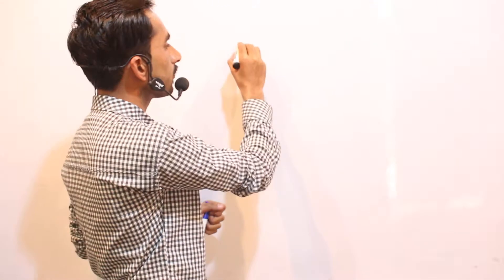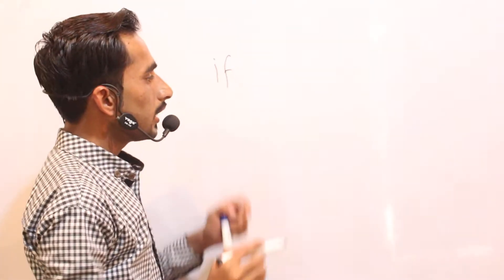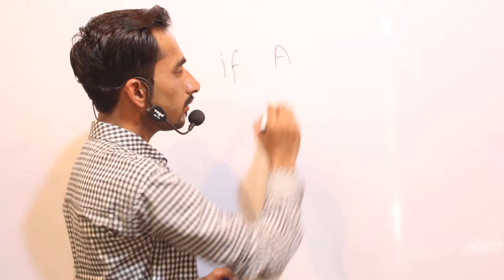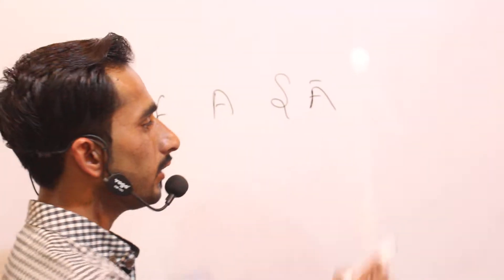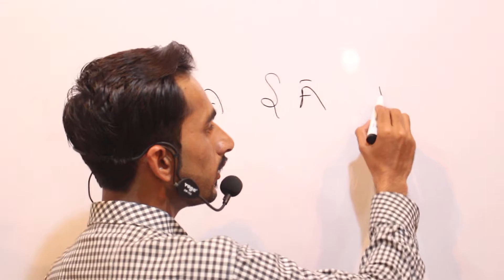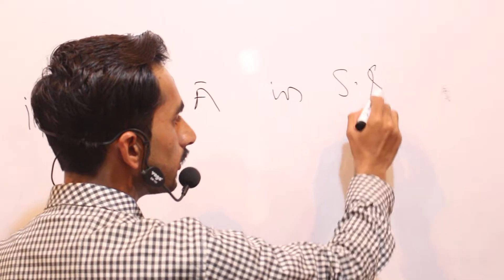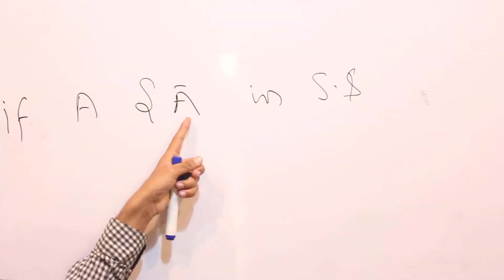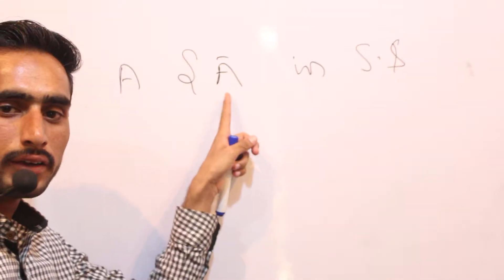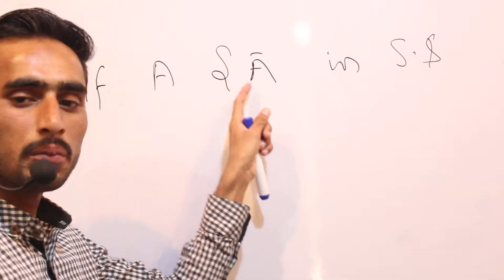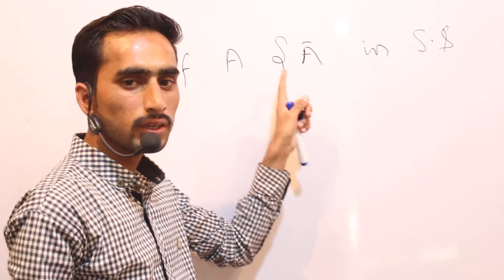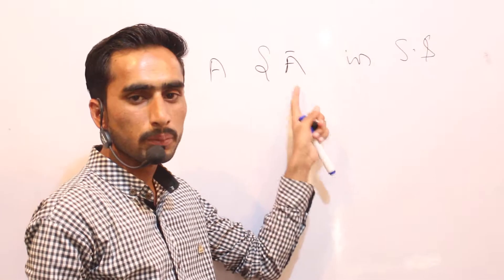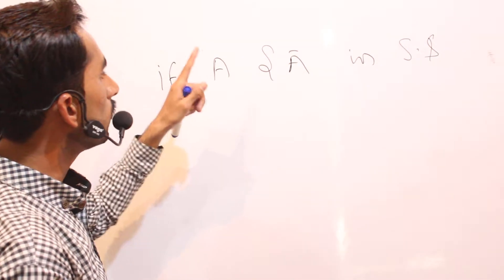If event A and A-bar are defined in a sample space, where A-bar is not equal to A, then A-bar is called the complementary event of A. Similarly, A is also called the complementary event of A-bar.